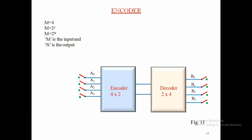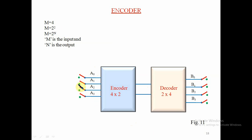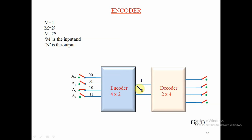Here is an animation showing the encoder. All switches are initially closed. Now activating switch A2 — the active pin produces output 1 0. That output 1 0 comes out as the encoder's output and is given as the input to the decoder. The remaining outputs are closed, and the decoder output 1 0 0 1 0 is produced, with that corresponding switch getting opened.